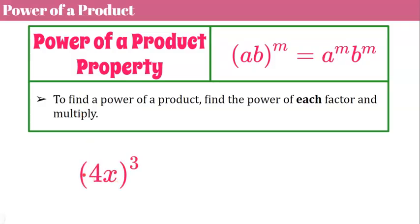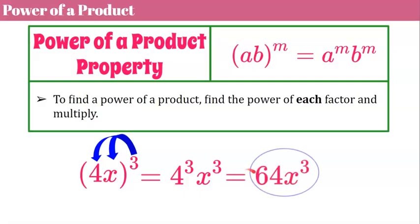Here's an example. So I have a 4 and an x, two different factors in parentheses, both to a power of 3. We're going to share the exponent of 3 to the 4 and to the x, so it's going to look like this: 4 cubed x cubed. 4 cubed is 64 x cubed. Remember, this could be written as 4x times 4x times 4x. Three fours, three x's.